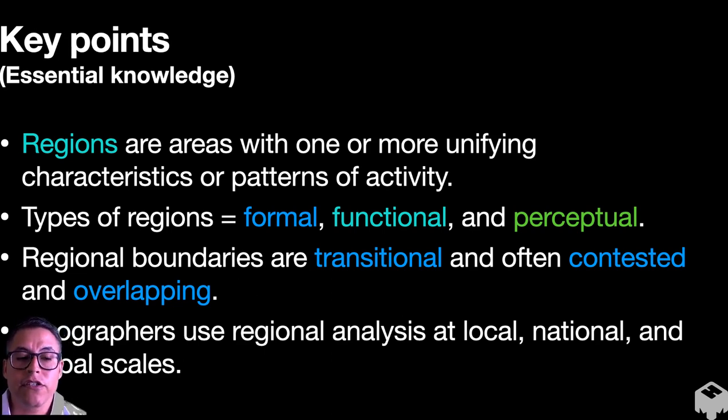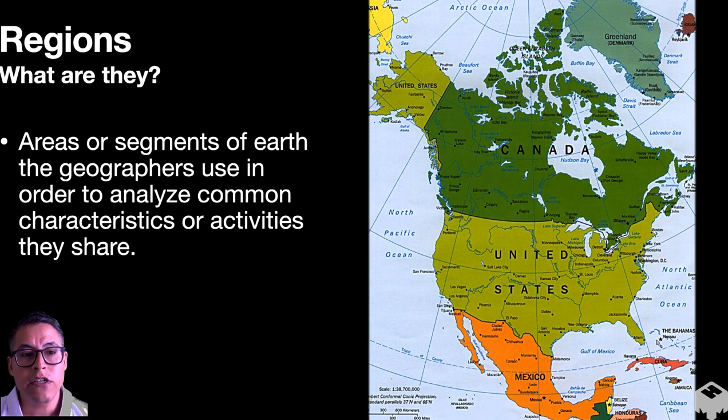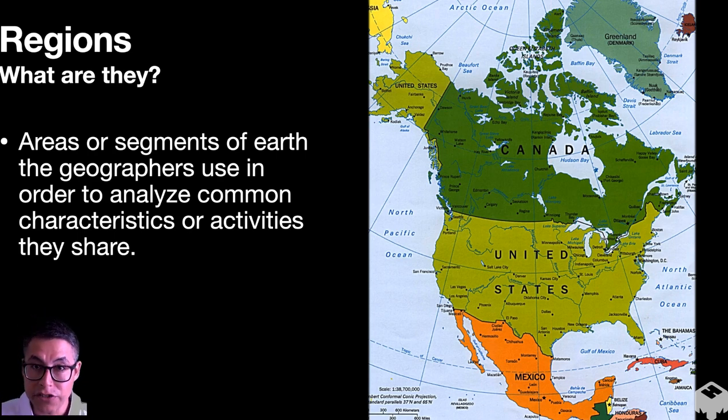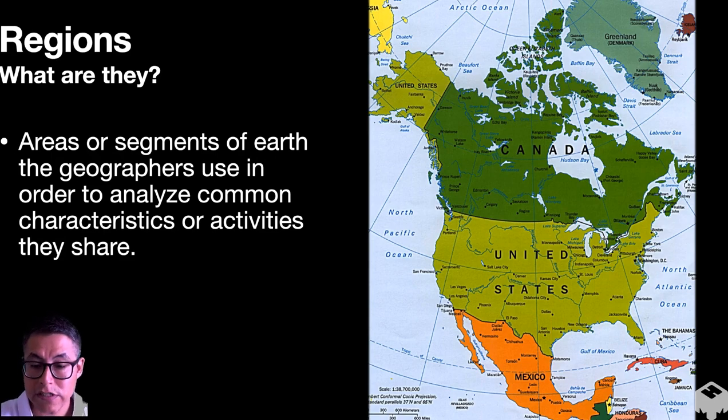And then finally, geographers use these regional analyses at local, national, and global scales. So what is a region specifically? It's an area or a segment of the earth that geographers use in order to analyze a common characteristic or an activity that these areas share. So here's North America, for instance.